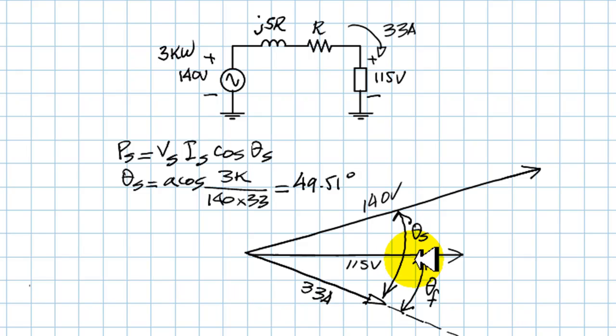But what we need is theta f. That's right. And this is the one we know. If only we knew this angle. What angle is that? Little delta. That is the torque angle. How am I going to find that? Well, we remember those two voltages and their angle are part of a triangle. If we solve that triangle, we find delta, and then we can solve for theta f.